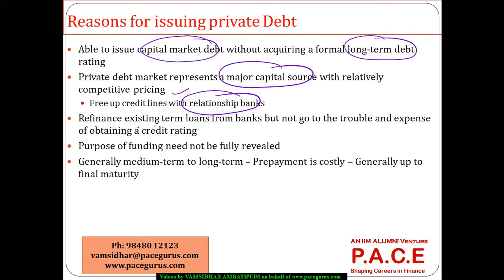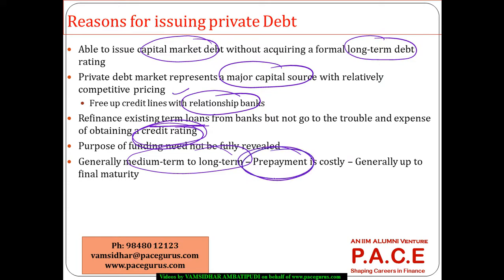Private debt also gives the possibility to refinance existing term loans from the bank, and this refinancing does not need to happen with a specifically obtained credit rating. Additionally, with a traditional bank loan the purpose of funding has to be clearly stated, but with private debt you do not need to reveal the purpose of funding. These debts are medium to long term in nature, and because the prepayment option is very costly, it is generally best to hold them through to their final maturity without pursuing any prepayment.